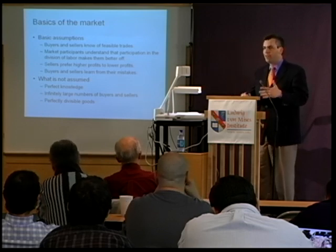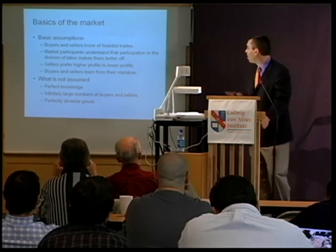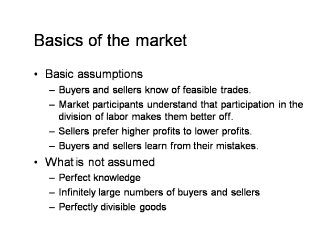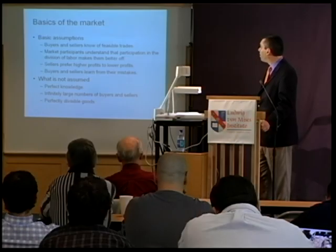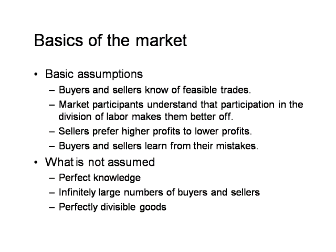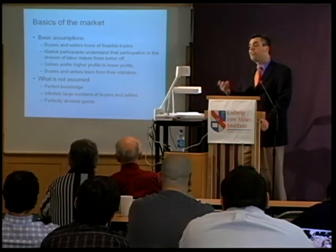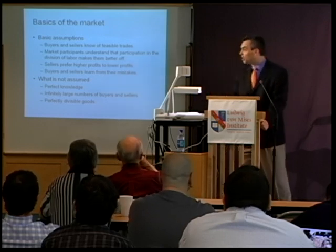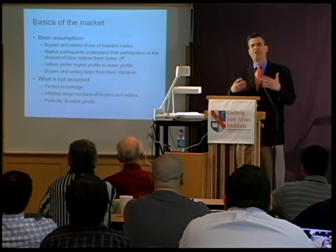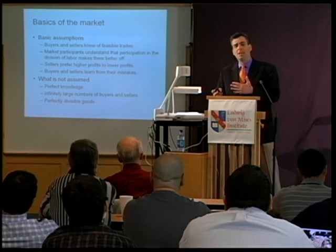Just to remind you of the institutional and informational assumptions of our analysis: we assume buyers and sellers are aware of at least some feasible trades, and that they know other agents in the economy may have goods and services they wish to buy or sell. Market participants understand that participating in the division of labor will bring them benefits. They have some cognitive faculty of awareness. We make simple assumptions: sellers prefer higher profits to lower profits, and buyers and sellers have the capacity to learn from their mistakes.